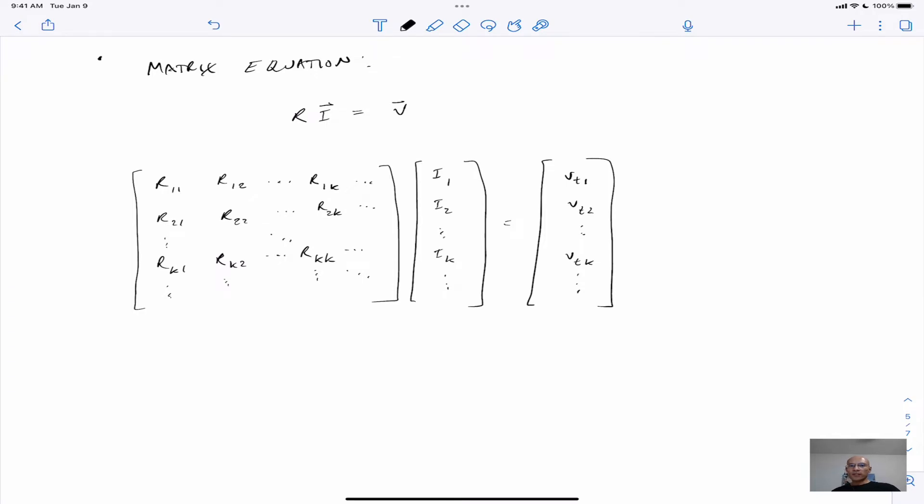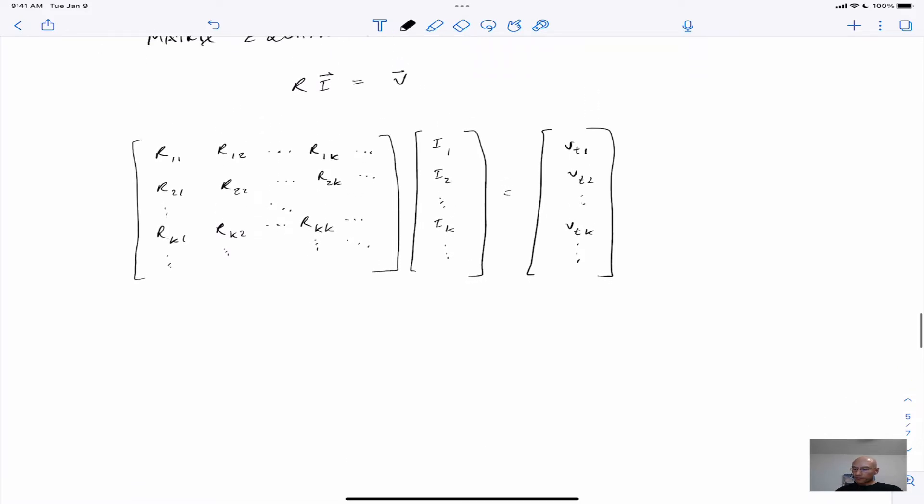Of course, our objective is to set up a matrix equation so we can solve n unknowns with n equations. Here, our n by n matrix is a matrix of resistances. We're solving for mesh currents, the I's.